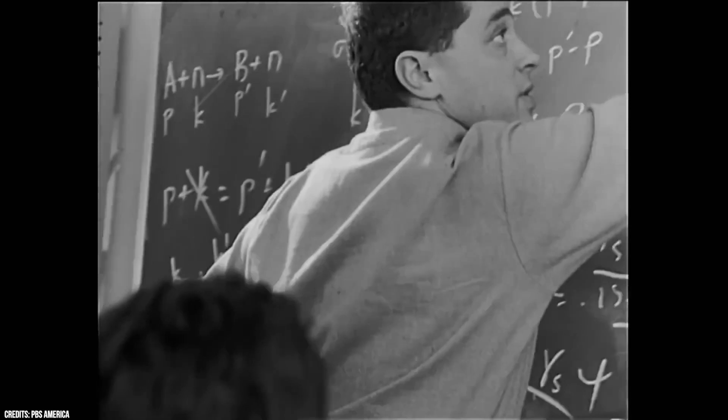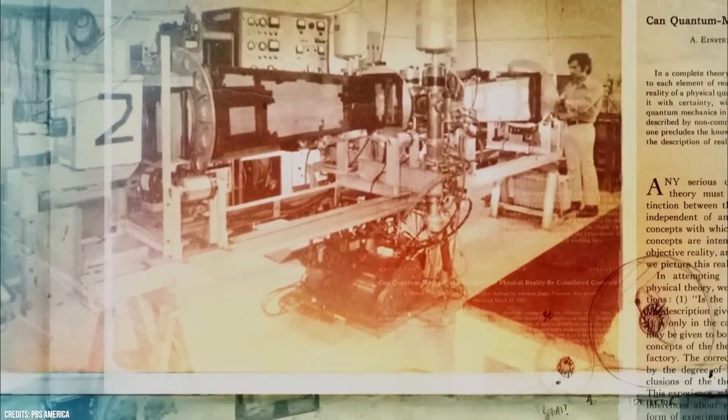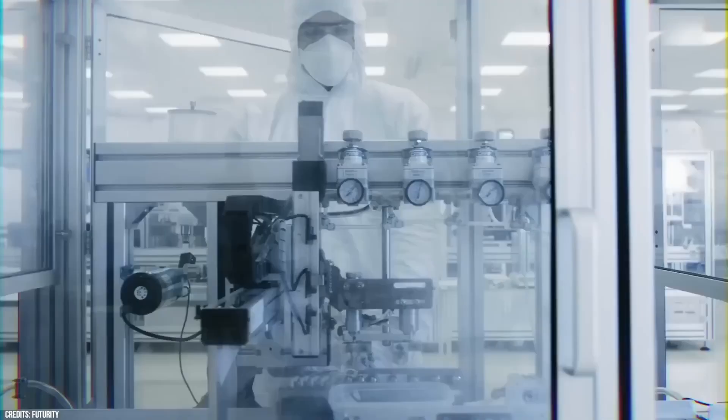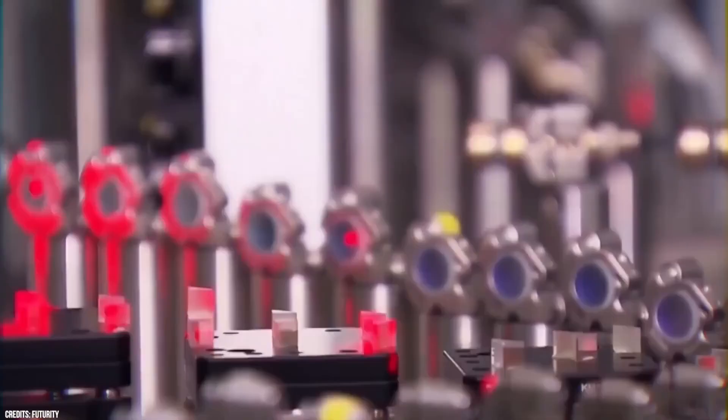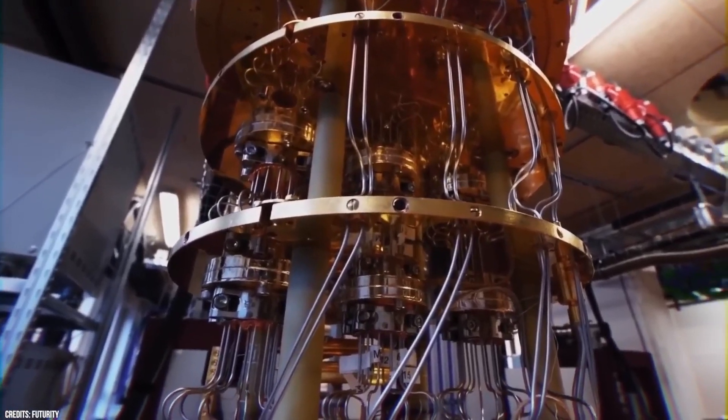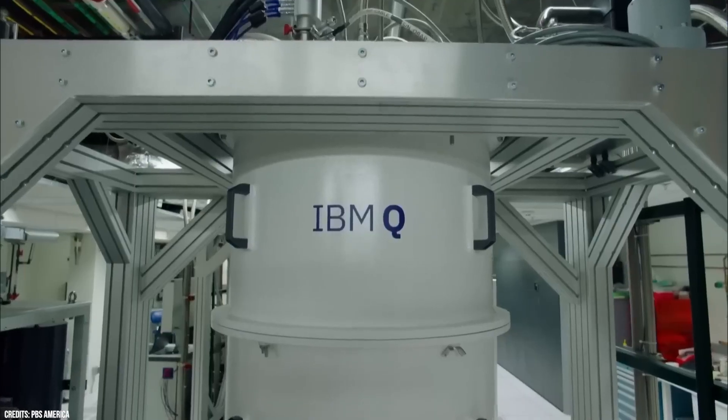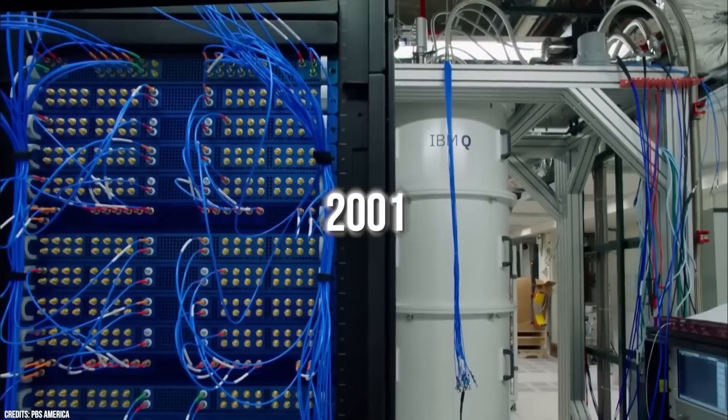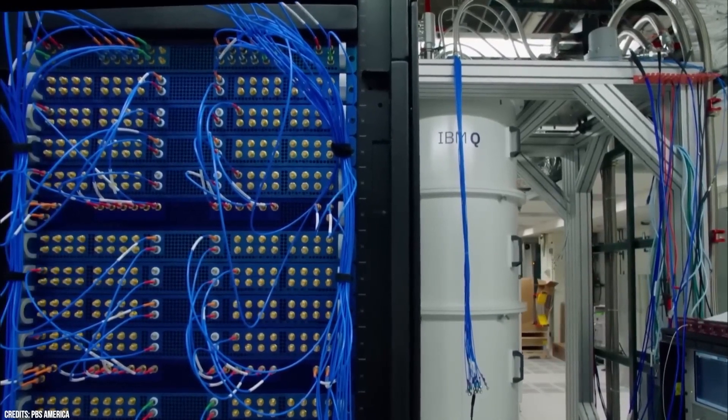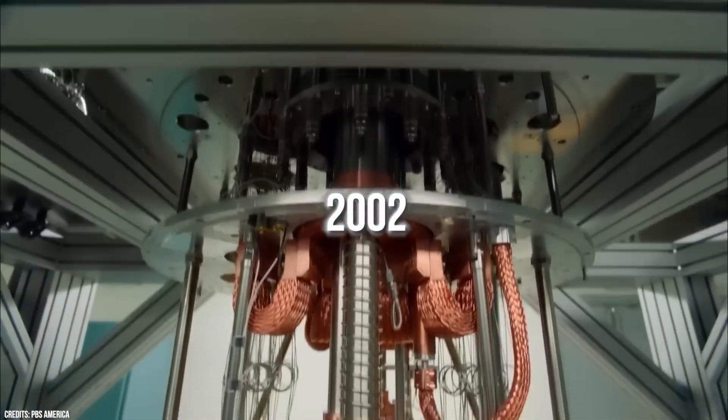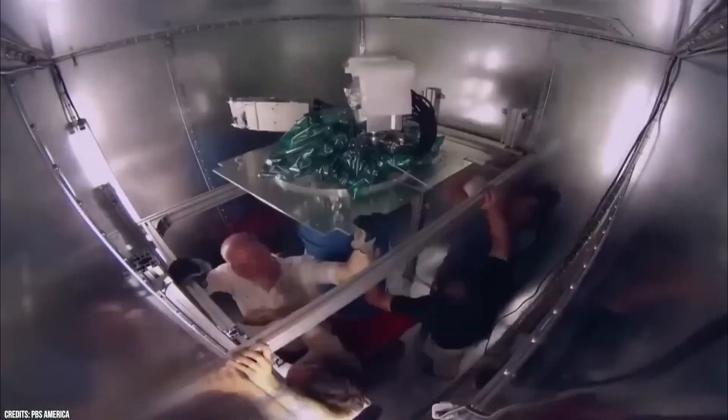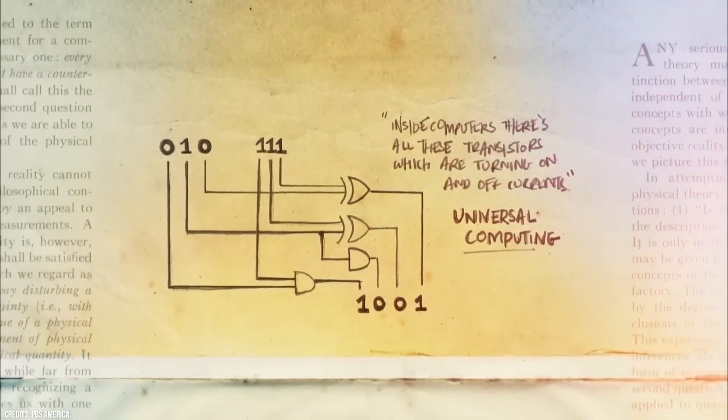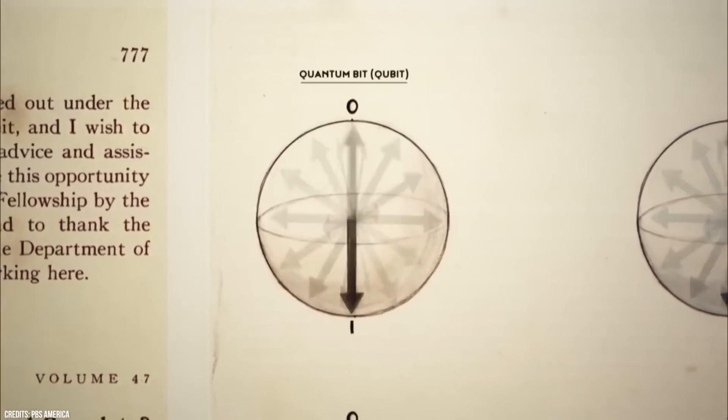The first practical implementation of a quantum computer occurred in 1998 when a research team at the Los Alamos National Laboratory built a two-qubit quantum computer using nuclear magnetic resonance techniques. While limited in capabilities, this achievement marked an important milestone. In the early 2000s, several research groups started making progress. Notably, in 2001, a team at IBM successfully built a seven-qubit quantum computer known as IBM Qubit. In 2002, scientists made progress in quantum error correction, developing methods to protect quantum information from errors. Researchers introduced new codes like the surface code, enhancing the reliability of quantum computers.